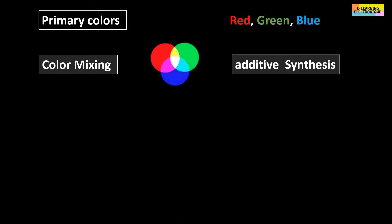With the three primary or basic colors that are red, green and blue, we can obtain white or any other color. The absence of color gives black. The operation which consists in combining several colors in order to obtain a new color is called the additive synthesis.